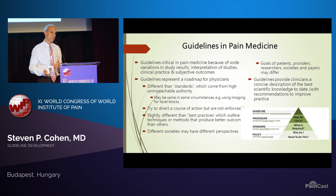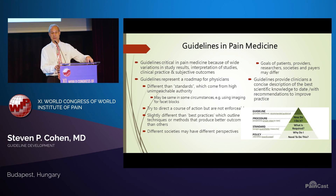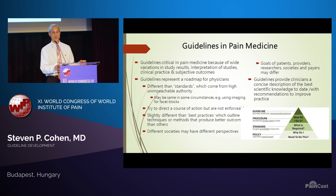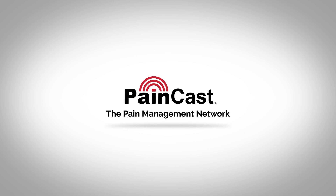Different societies and stakeholders have different perspectives, and the goals of patients, providers, researchers, and payers may differ. As you can see here: policy asks 'why do I need to do this?'; standards ask 'what exactly do I need to do, and what are the consequences if I don't?'; procedures ask 'how do I do this?'; and then you have guidelines, which kind of overlap.